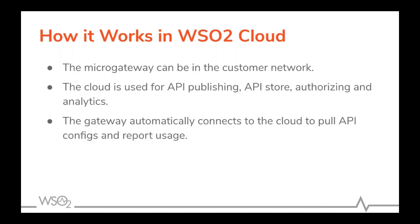Let's see how it works in WSO2 Cloud. The micro gateway can be deployed within the customer network — your data center, private cloud, or a VPC provided by any cloud service provider like AWS or Google. You can create and publish APIs, use our developer portal, generate keys, subscribe to those APIs, invoke APIs, and view analytics. After configuring the micro gateway to run with WSO2 Cloud, the gateway automatically connects to the cloud, pulls API configurations, and sends summarized usage statistics to the cloud periodically.